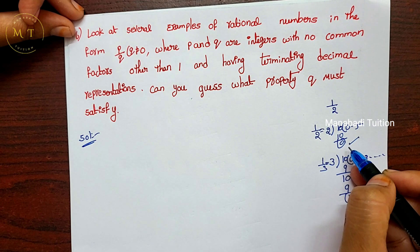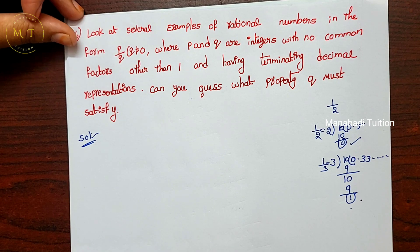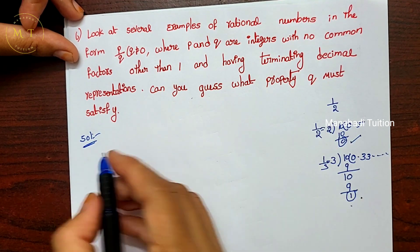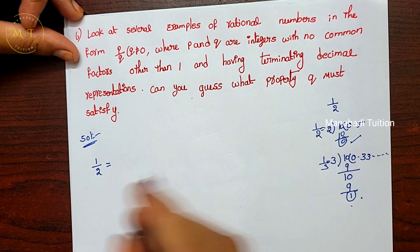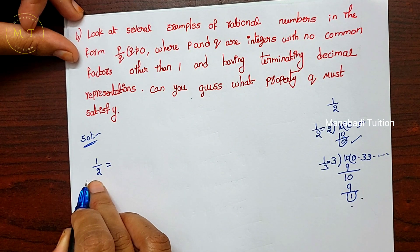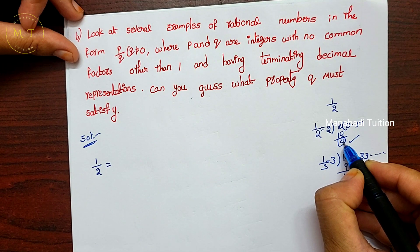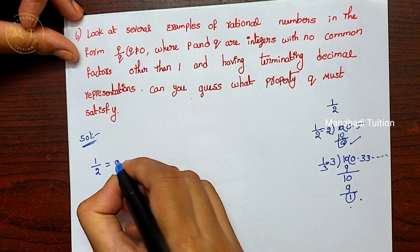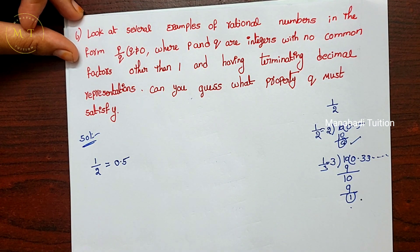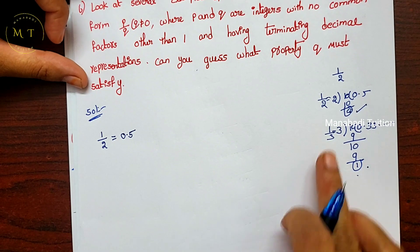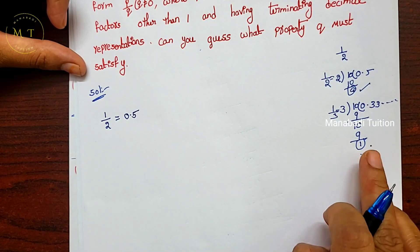Let's start with examples of terminating decimals. Take 1 by 2: when you divide, the remainder becomes 0, so the answer is 0.5 — the number ends there. Next, 1 by 3 is not terminating because the remainder never becomes 0, so we skip 1 by 3.